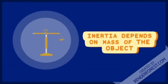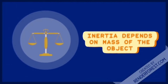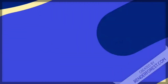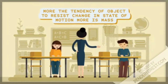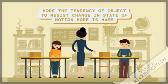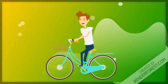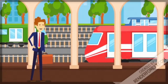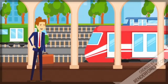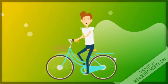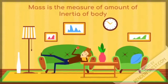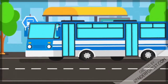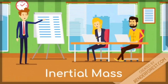Inertia depends on the mass of the object — the more the mass, the greater the tendency to resist change in state of motion. In other words, mass is a measure of the amount of inertia. The amount of inertia present in an object is essentially its mass. For example, what is easier to move — a bicycle or a train? A bicycle, of course. Because the opposition offered by a train to change its state from rest to motion is much greater compared to a bicycle. Hence, more the object resists change in state of motion, more is the mass of the object. We also call this mass as inertial mass.